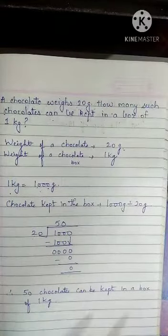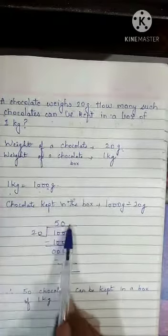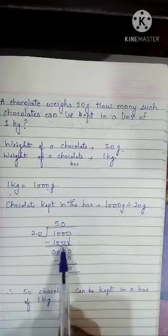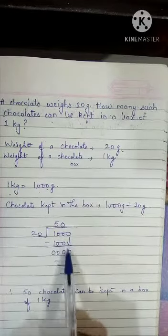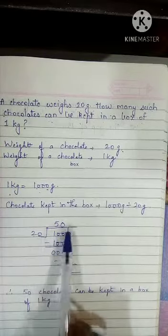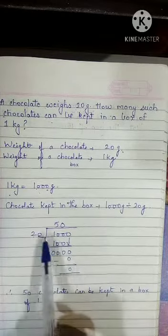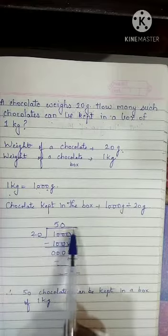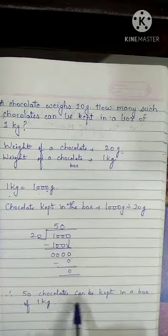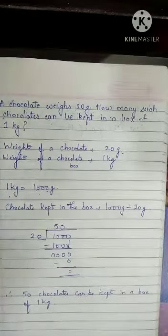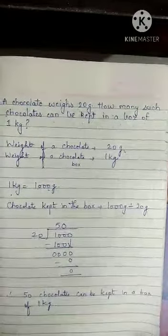Sorry children, it was not visible, so I am explaining again. 20 × 5 is 100. 100 minus 100 is 0. Bring down this 0. 20 × 0 is 0. So the answer is 50. Hence, 50 chocolates can be kept in a box of 1 kg. Clear everyone? Next question.